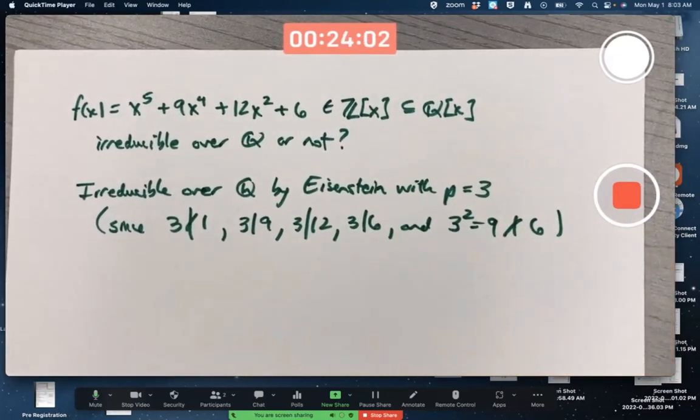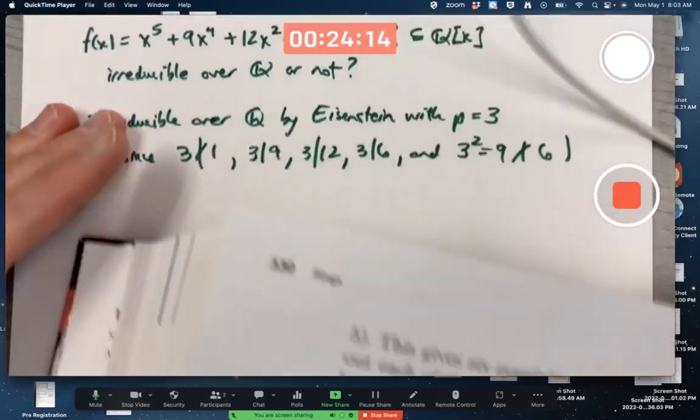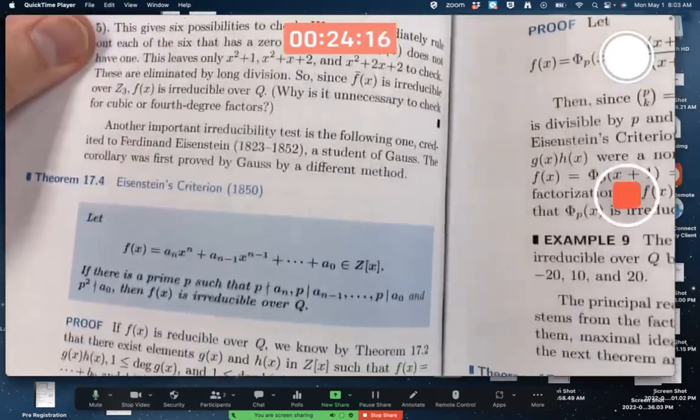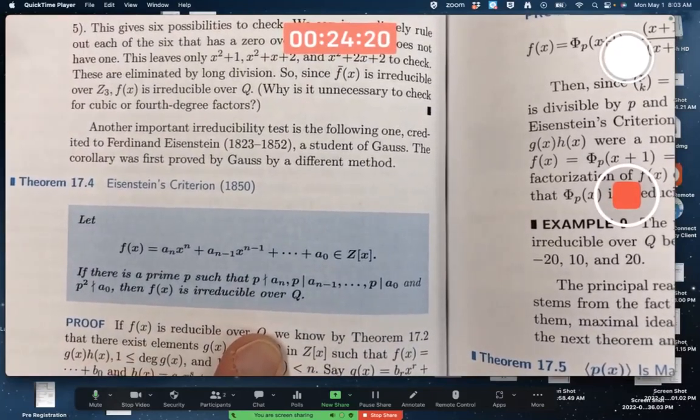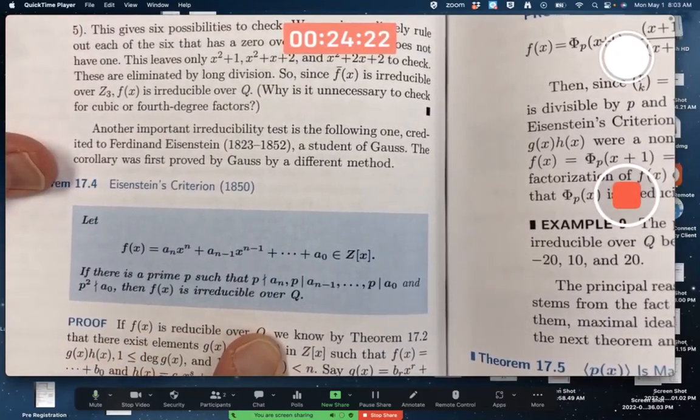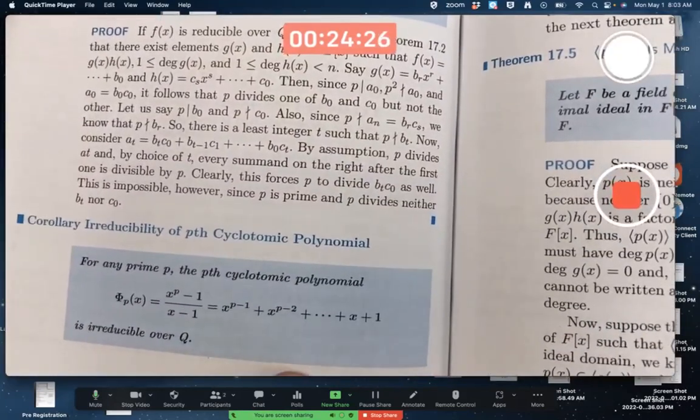What a weird theorem, Eisenstein. How'd you think of that? Well, to tell you the truth, I don't know. I haven't looked it up historically. But if you look at the next theorem, which is a corollary of Eisenstein, so here's Eisenstein's criterion right here, which we just used. This is a strange little fact. Probably, I'm guessing, Eisenstein was motivated by this corollary.